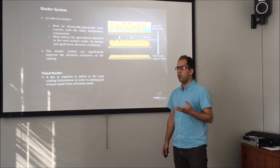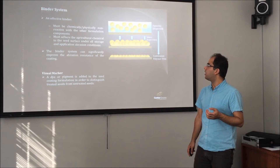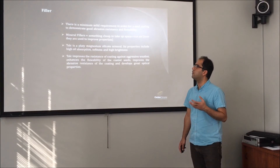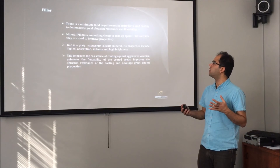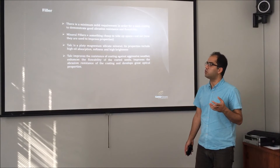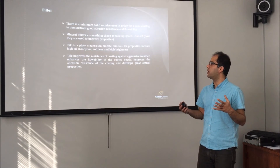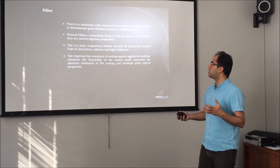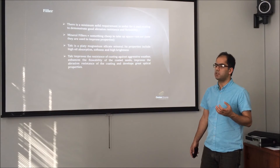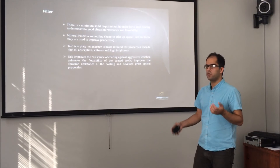Visual markers — dyes or pigments — are added to the formulation to help distinguish between treated and non-treated seeds. Fillers are also added to the formulation. There is a minimum solids requirement for the seed coating to show good abrasion resistance and good flowability. When the solid component is not sufficient, mineral fillers are added. These are not just fillers for volume — they also improve properties such as abrasion resistance and flowability. Talc is usually used for this purpose.